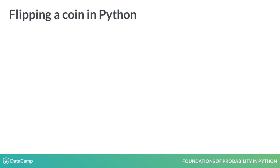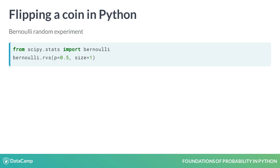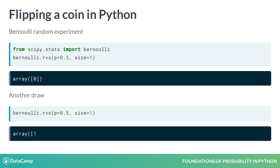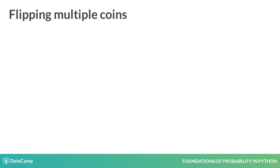To simulate the coin flips, we will use the Bernoulli object from the Python library scipy.stats. We can call Bernoulli.rvs specifying two arguments to generate random variants. The first argument is p, the probability of success, which in this case is 0.5. The second is size, which is the number of coin flips — in this case, 1.